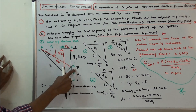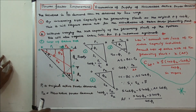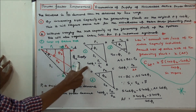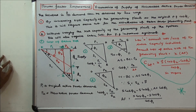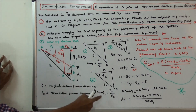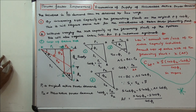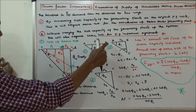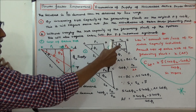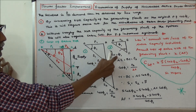The third triangle is AEF. First, cos phi 1 is equal to P1 divided by S1, and cos phi 2 is equal to P2 divided by S2. Now, in this third triangle, the angle is phi 1, and this angle is 90 minus phi 1.